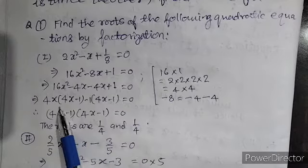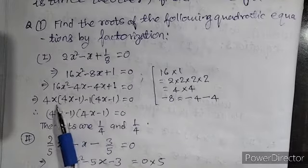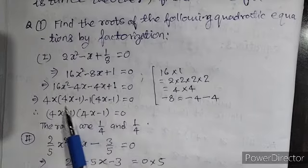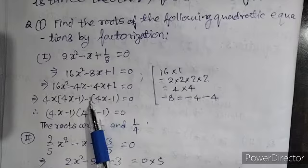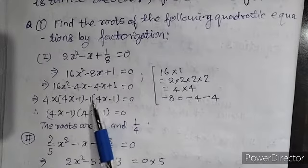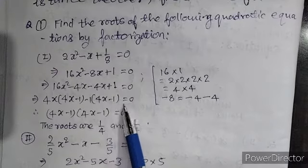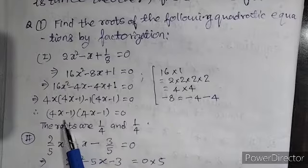4x common from two terms. 4x is taken out common under bracket 4x minus 1. Now, minus 1 is taken out common from another two term. You will get under bracket 4x minus 1 equal to 0. Therefore,